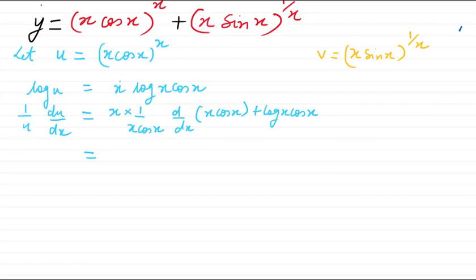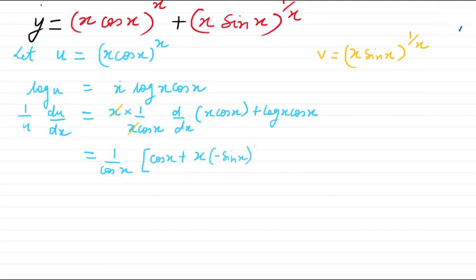We can simplify — cancel out this x here. After simplification it becomes log(x·cos x). From here we get the value of du/dx. So du/dx equals u divided by cos x.